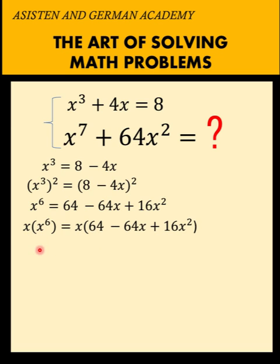So multiplying by x, we get x to the 7th at the left. And we distribute this x to this trinomial to arrive at 64x minus 64x squared plus 16x cubed.